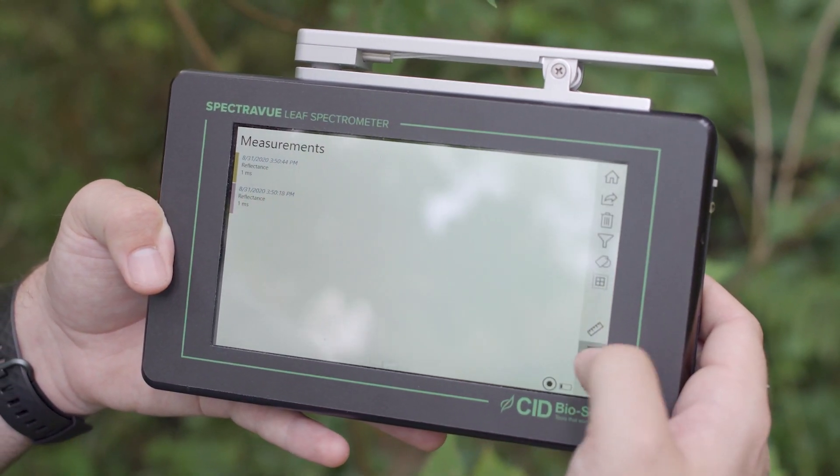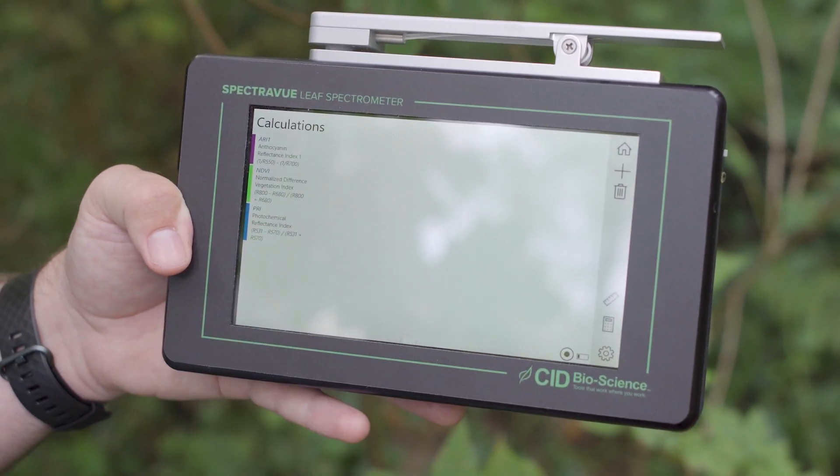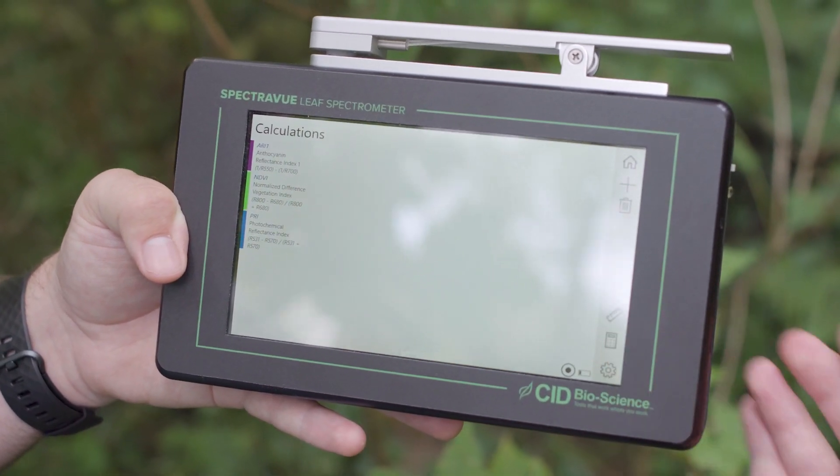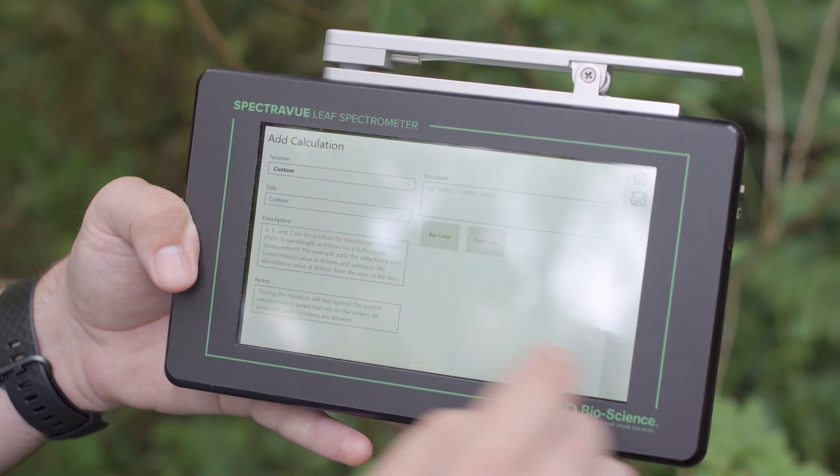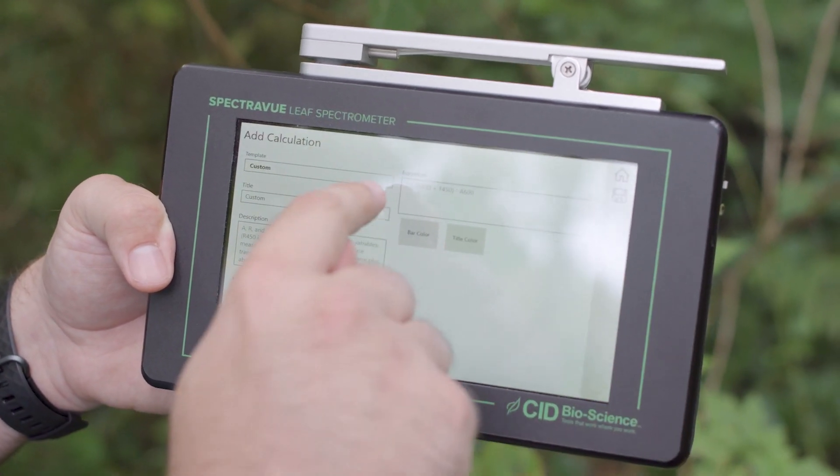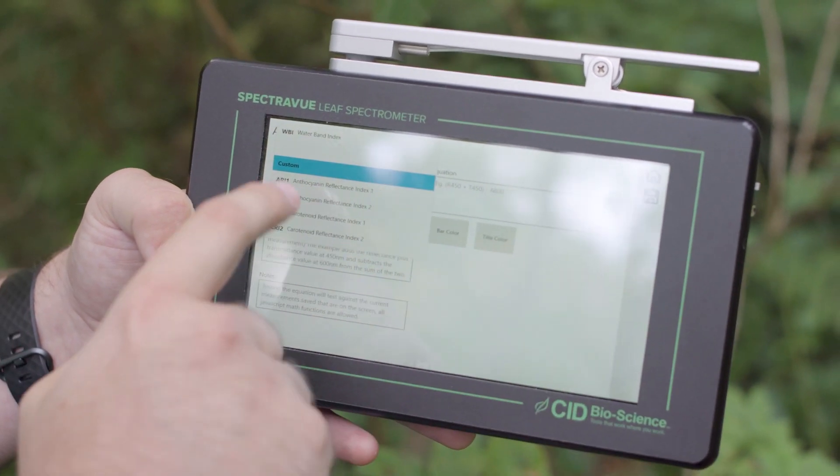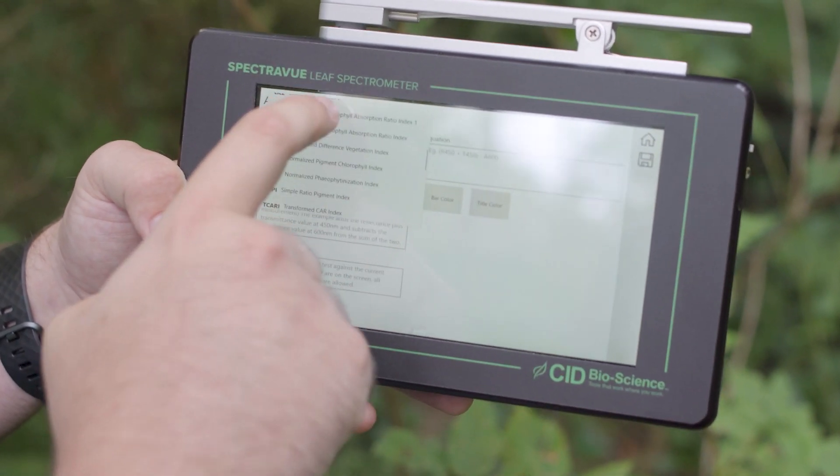And then if you want to change your actual indices that you've chosen, you can go to the calculations sheet by clicking the calculations button. Then you can add new calculations or indices by going to this screen and adding either a custom index or any one of the preloaded indices.